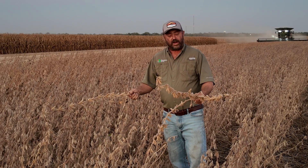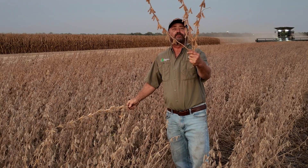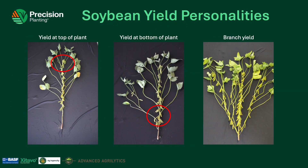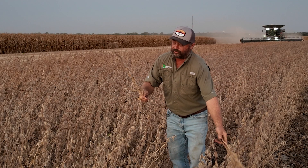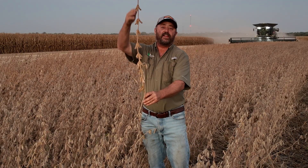One of the things we're trying to understand is yield personality. We've got some soybean varieties that offer branching — the main stem plus branches — giving us more nodes and more soybeans. Then we also have some soybean varieties that don't have branching opportunities; they're just more of the main stem node. If we know the yield personality of these soybean varieties, it will help us place these beans on the right acre at the right seeding rate.